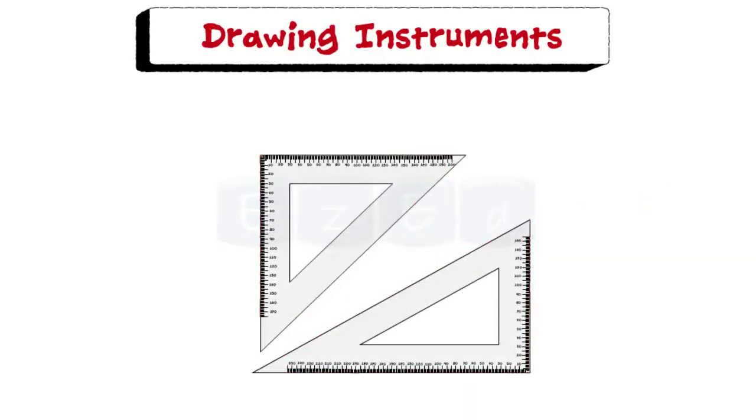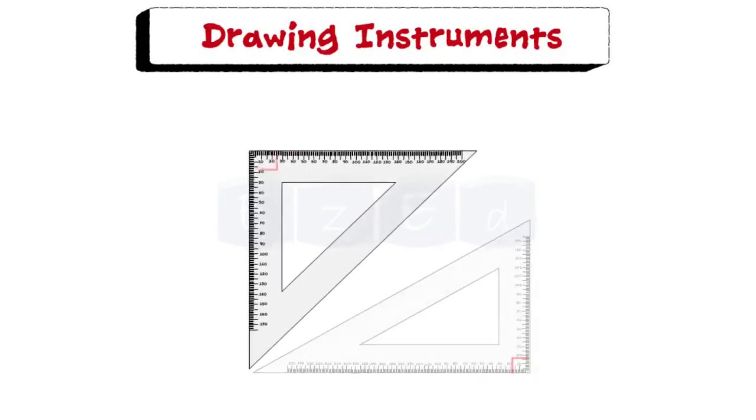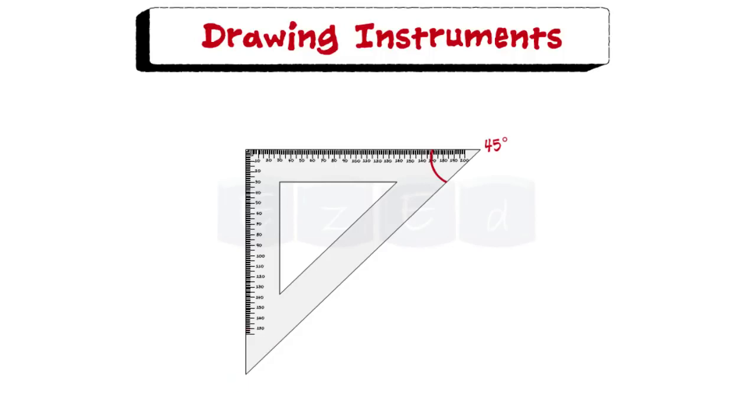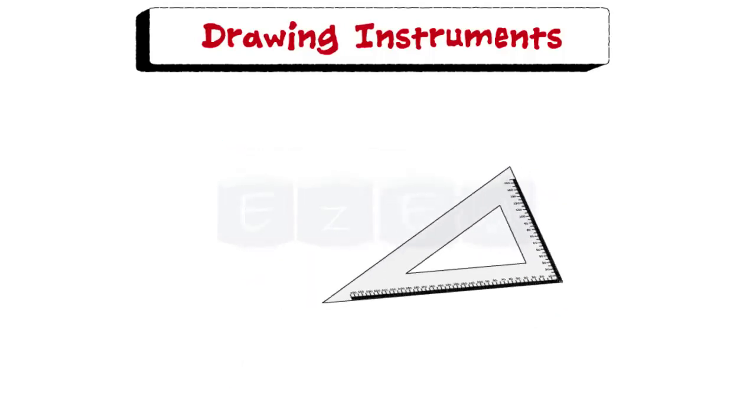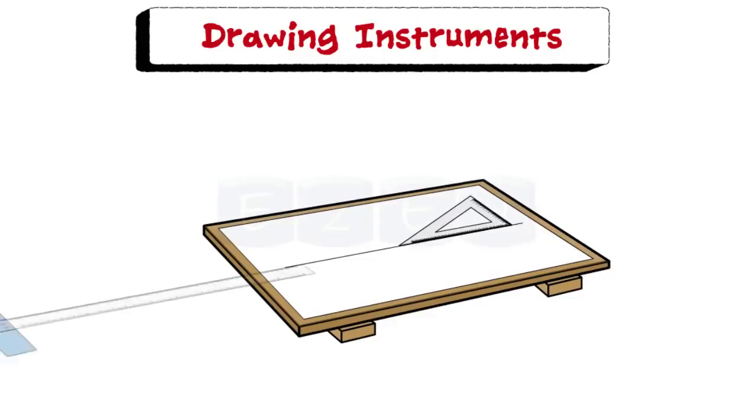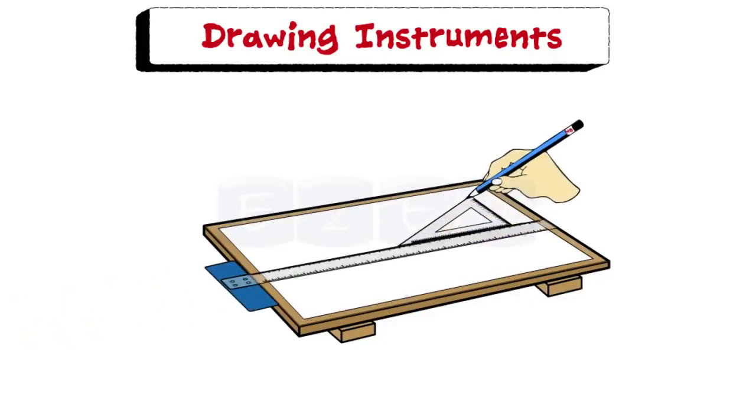Set square is triangular in shape with one of the angles as right angle. Two forms of the set square are generally used: one having angles 45, 45, and 90 degrees, and the other is 30, 60, 90. Set square in combination with T-square is used to draw lines at an angle.